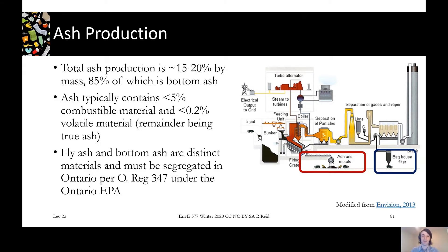Typically ash is less than five percent combustible if we've done a good job burning out the material, and less than 0.2 percent volatile. The remainder is the true ash that's inorganic and wouldn't have burned in any case, so over 95 percent or so is the actual true ash fraction. Fly ash and bottom ash are both called ash but they're very distinct materials in terms of where they come from, what they're like, and what hazards are associated with them. According to Ontario Regulation 347 under the Environmental Protection Act, these ashes have to be handled separately and segregated.